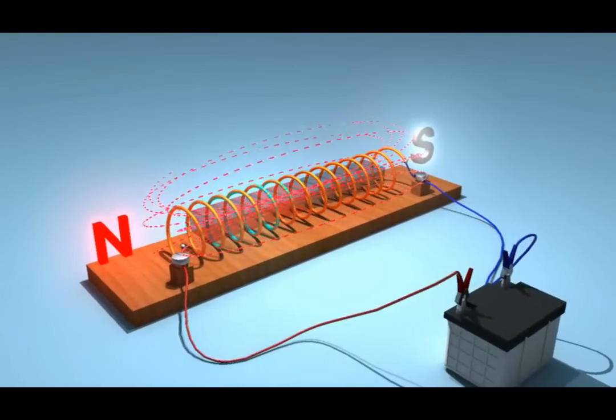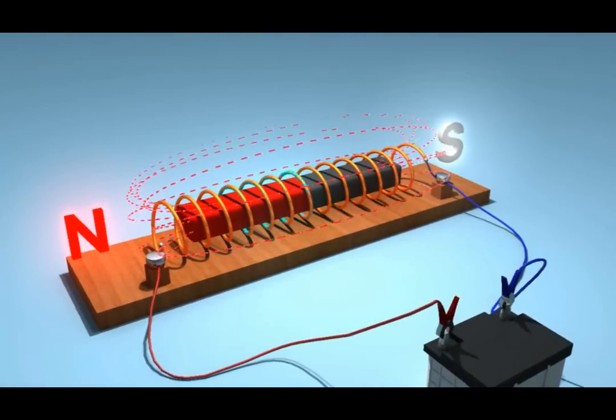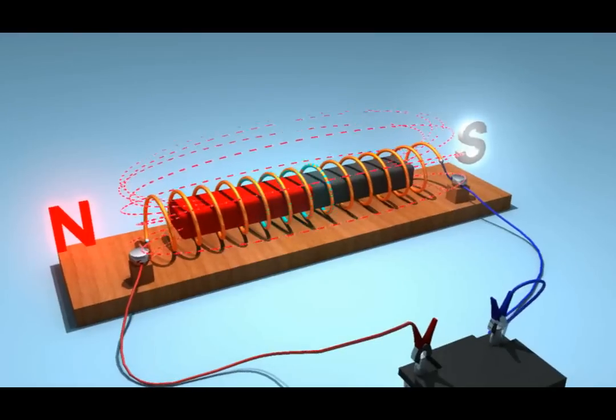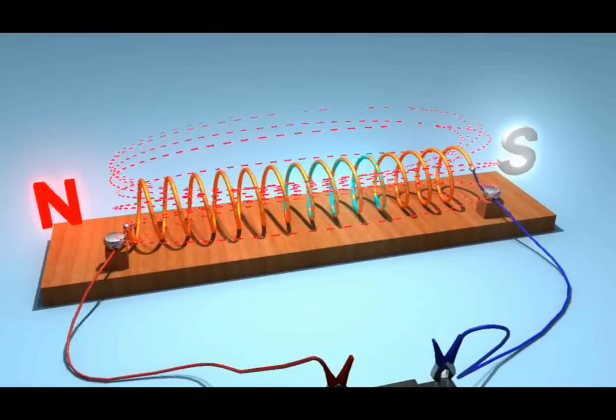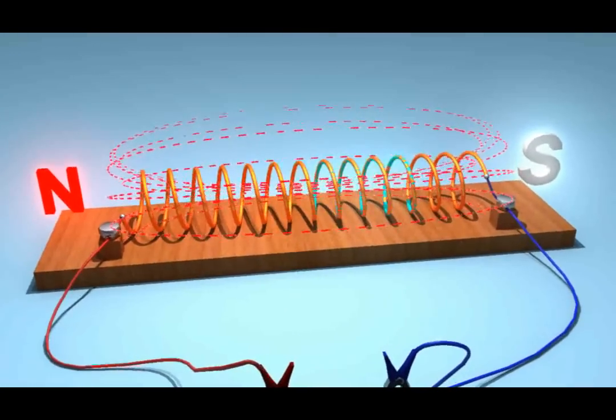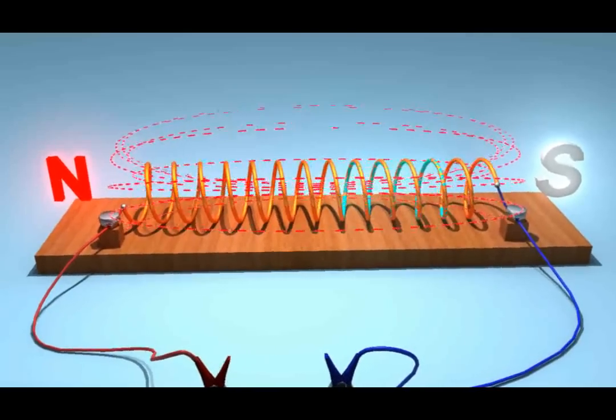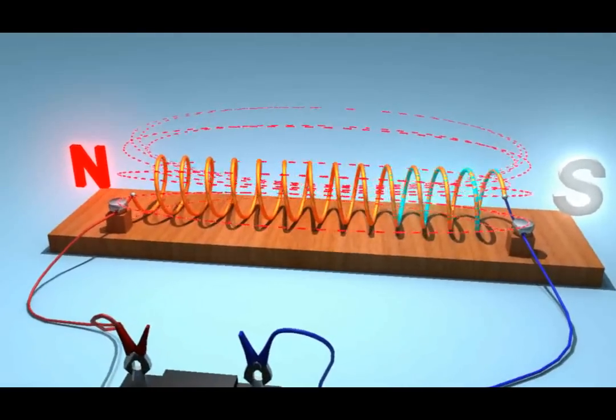The magnetic field lines in a solenoid are the same as in a bar magnet. They pass through the solenoid and return from the other end. The field lines inside the solenoid are parallel to each other.